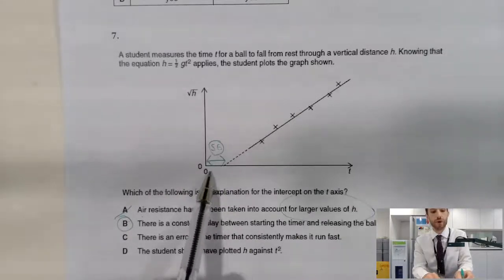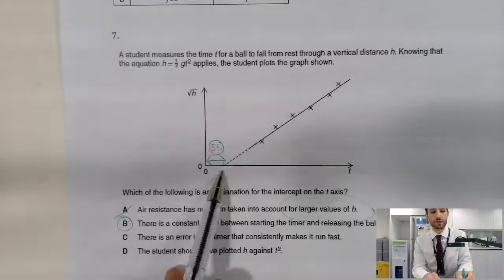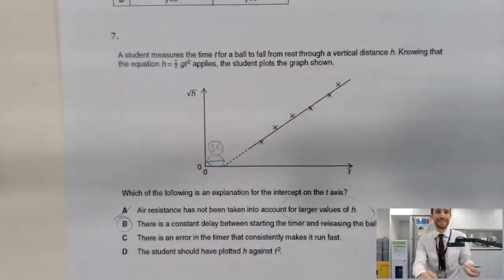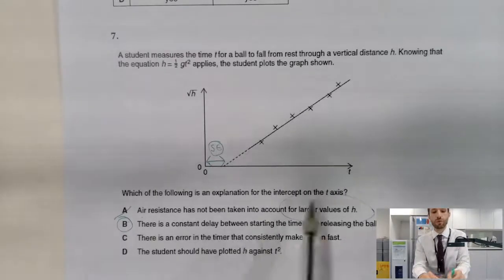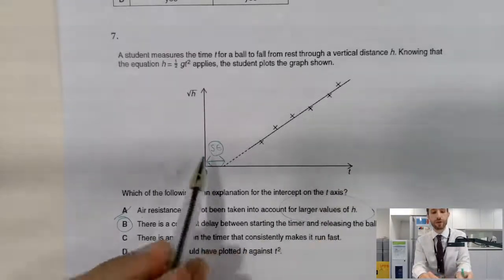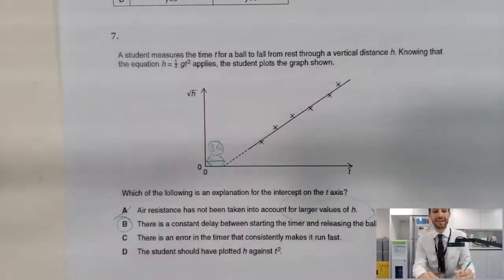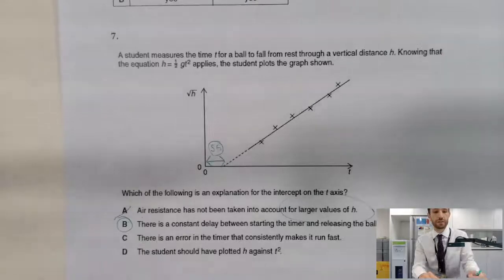There is a constant delay between starting the timer and releasing the ball. That would explain it because we're always getting a time which is too big and too big by the same amount every time. An error in the timer that makes it consistently run fast. Well, that would not change the value of t in terms of a systematic error. That would be a scaling error. And then h against t squared, actually, if you put h against t squared, you would also get a straight line here as well. So let's be.